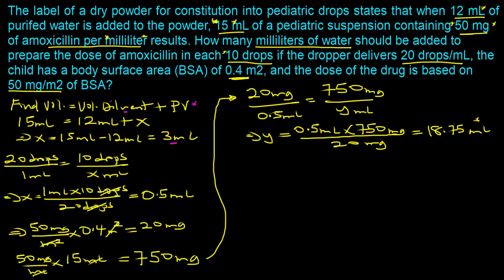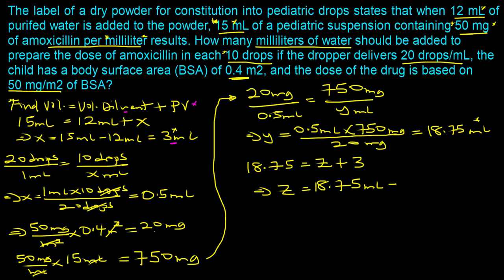Now we can go back to the original reconstitution equation. Final Volume = Volume of Diluent + Powder Volume: 18.75 mL = z + 3 mL. Solving for z: z = 18.75 mL − 3 mL = 15.75 milliliters. So 15.75 milliliters of diluent should be added.